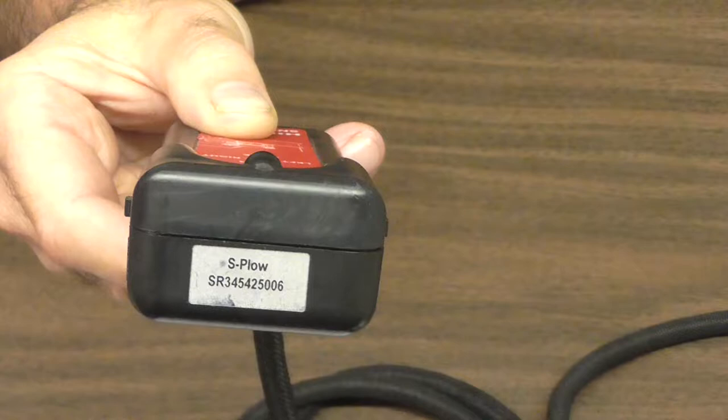It can be used on any mid-weight plow, heavy-duty steel straight, scoop plow, or a trip edge plow. The R tells us that the switch is replaceable.